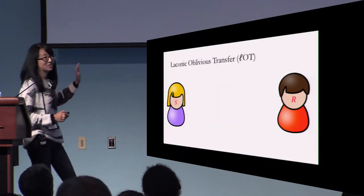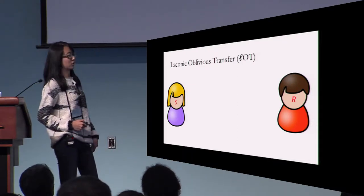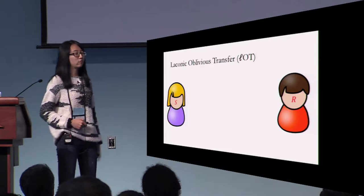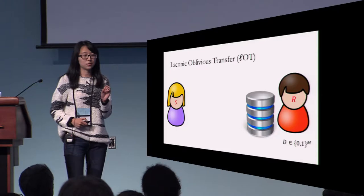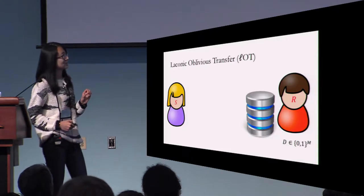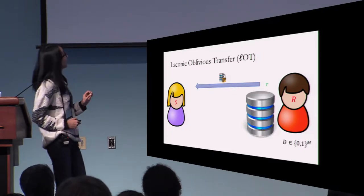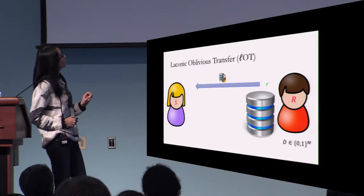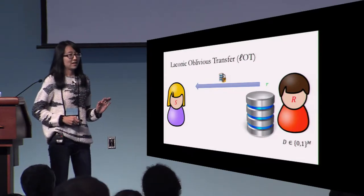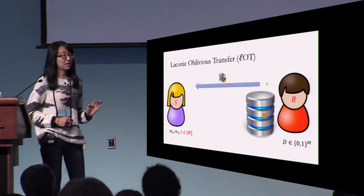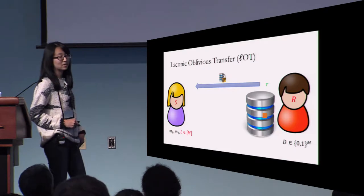Here comes the most important slide of this talk — the definition of laconic OT. It is almost the same as before, except now the receiver, instead of just having one bit as input, has a huge database of size M. In the first message, he somehow commits to this huge database to the sender and keeps some randomness R as private information. The sender again has two messages M0, M1, but in addition she can pick a location L of the database.